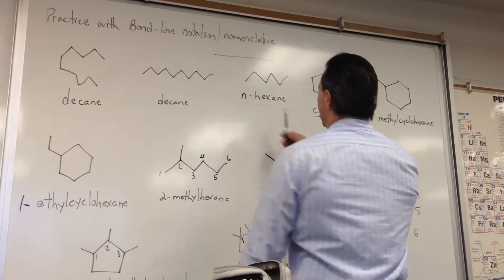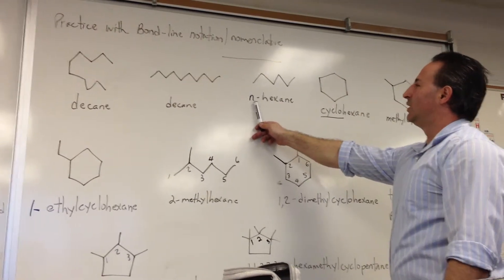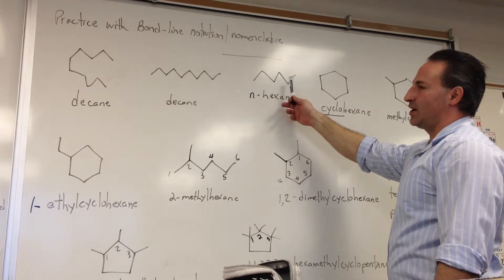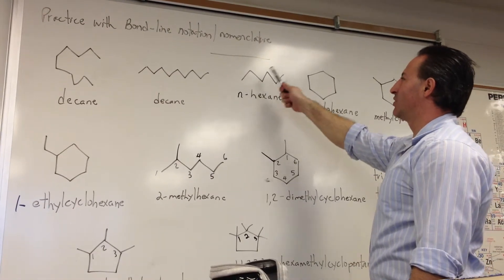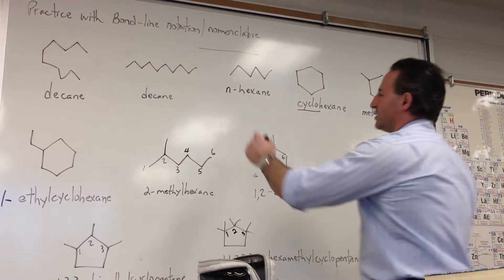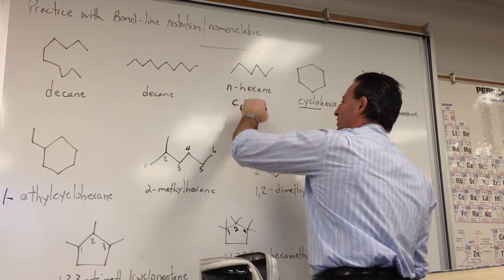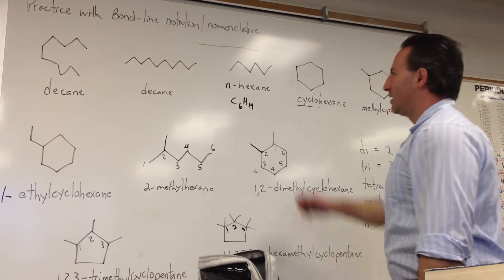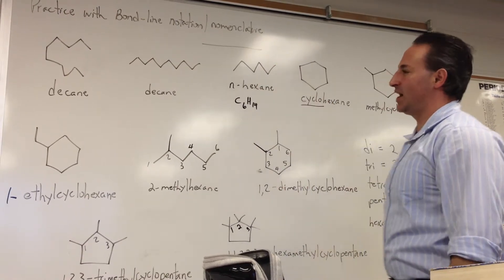I have an example here of n-hexane, n for normal, meaning that it's the saturated alkane, the simplest form of carbon-6, with the formula C6H14. When it's saturated, fully saturated, it has the maximum number of hydrogen atoms in there.